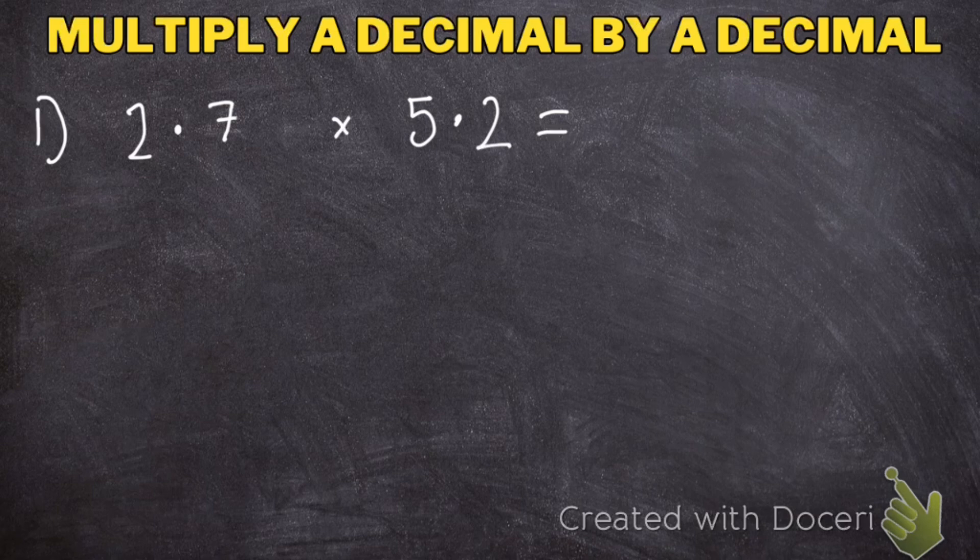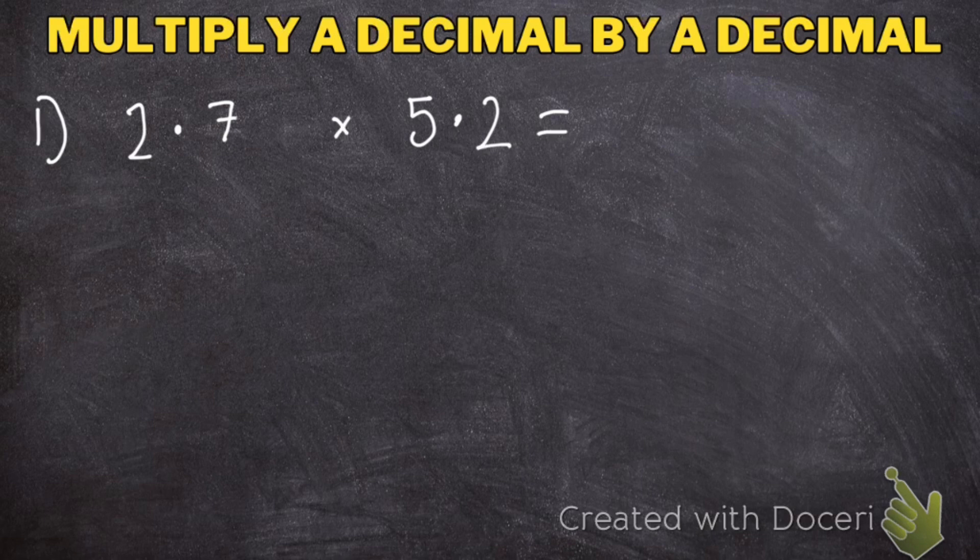When you're multiplying a decimal by a decimal, there's just one magic secret formula that you need to know. If you know how to do it, then multiplying decimals is so easy. Let's get straight to it.